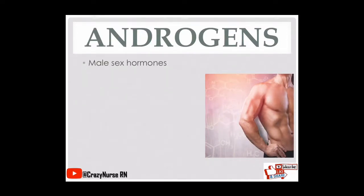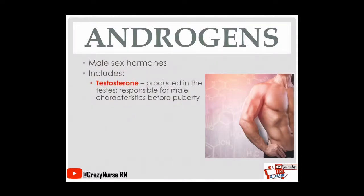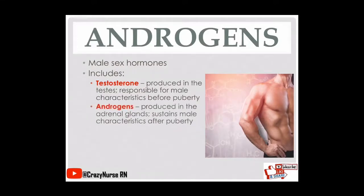Androgens are male sex hormones. Testosterone is produced in the testes and is responsible for male characteristics before puberty. Androgens are produced in the adrenal glands and sustain male characteristics after puberty. There is an important difference: testosterone is responsible for male characteristics before puberty, while androgens act after puberty.